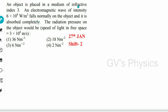An object is placed in a medium of refractive index 3. An electromagnetic wave of intensity 6 × 10⁸ W/m² falls normally on the object and is completely absorbed. The radiation pressure on the object would be — so they are asking for radiation pressure, which is a rare question, but we have the formula for it.